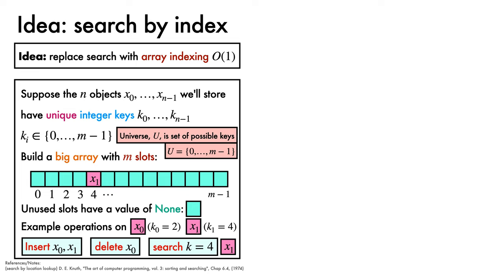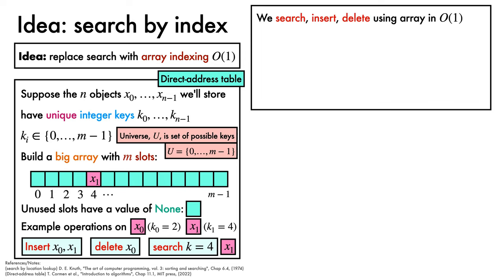This data structure, which is called a direct address table, seems gloriously fast and simple, and it is. We have our three desired operations in constant time. So, what is the catch? Consider the question of what happens if the universe of possible keys is much larger than the number of objects we want to store. The answer is, lots of wasted space for empty array entries.